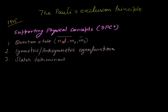The first concept is the quantum state, which includes the space quantum state and spin quantum state. The space quantum state is defined by quantum numbers: n, l, and m_l — the principal quantum number, orbital quantum number, and magnetic quantum number. With the spin quantum number, we also define the spin quantum state. Here I have considered only the anti-symmetric eigenfunction.